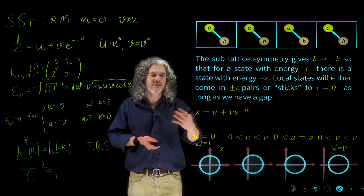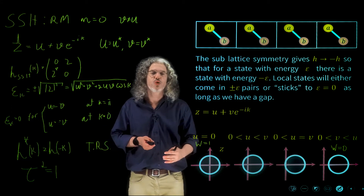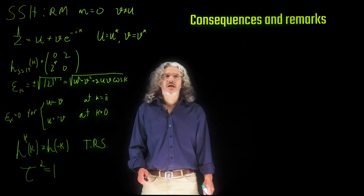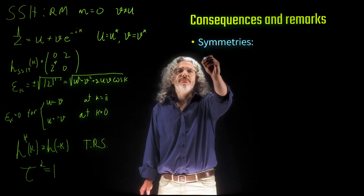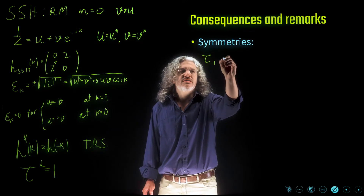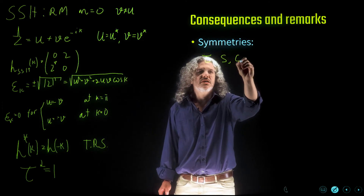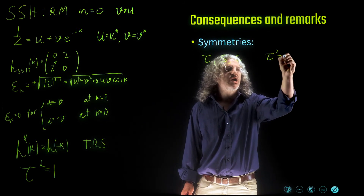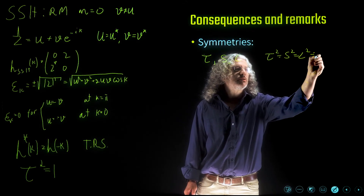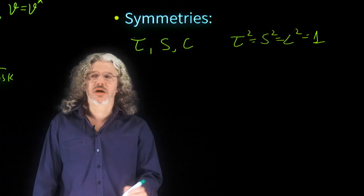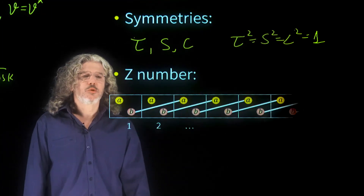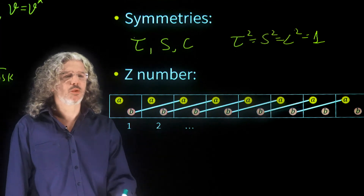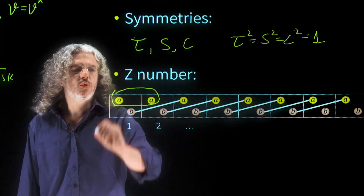Later on in the course we will relate these winding numbers to topological invariants. To summarize, we studied the SSH model — the Rice-Mele model with M equal to zero — and it has the following symmetries: time reversal symmetry tau, sub-lattice symmetry S, and particle-hole symmetry C for charge conjugation. We found that tau squared equals S squared equals C squared, all equal to one. Also, there are end modes in the system. If we include next-nearest neighbor tunneling, we will have two end modes instead of one, as long as we keep the sub-lattice symmetry.